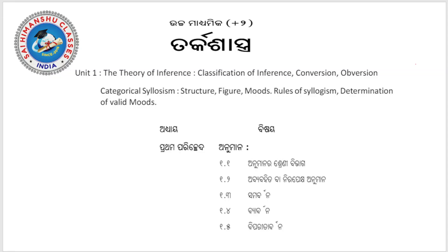Logic First Chapter is Theory of Inference. The theory of inference covers the classification of inference, conversion, obversion, categorical syllogism, structure, mood, rules of syllogism, and determination of valid moods. This is the overall topic for the chapter.